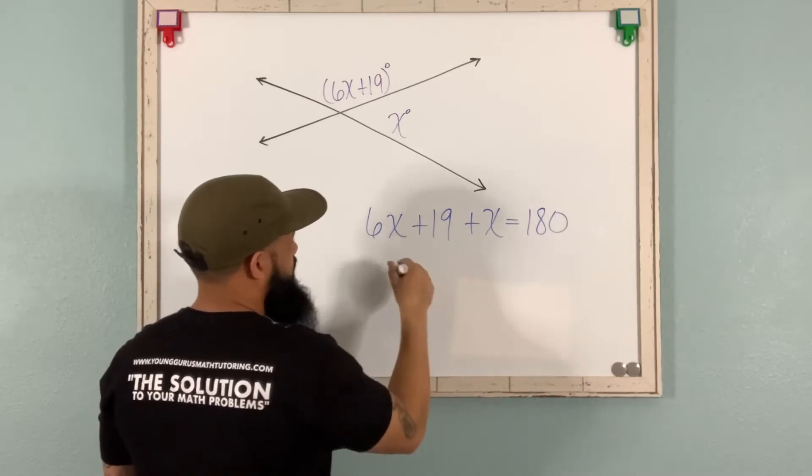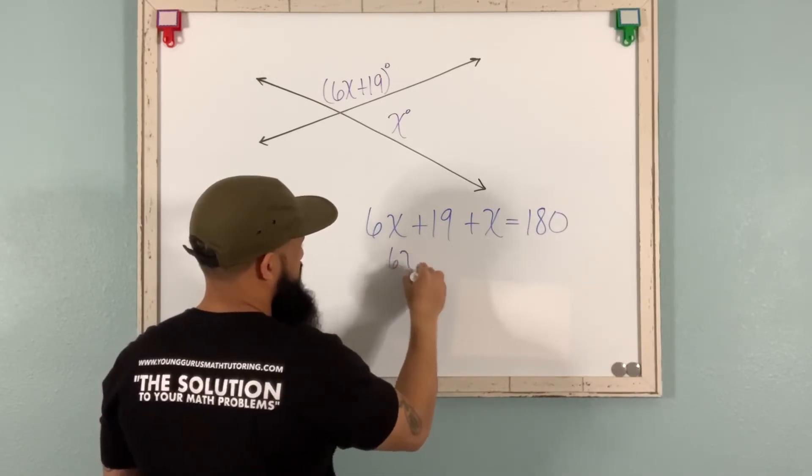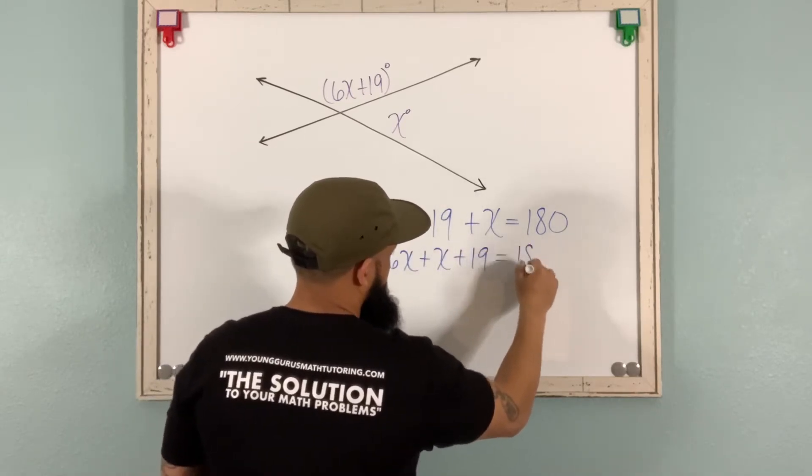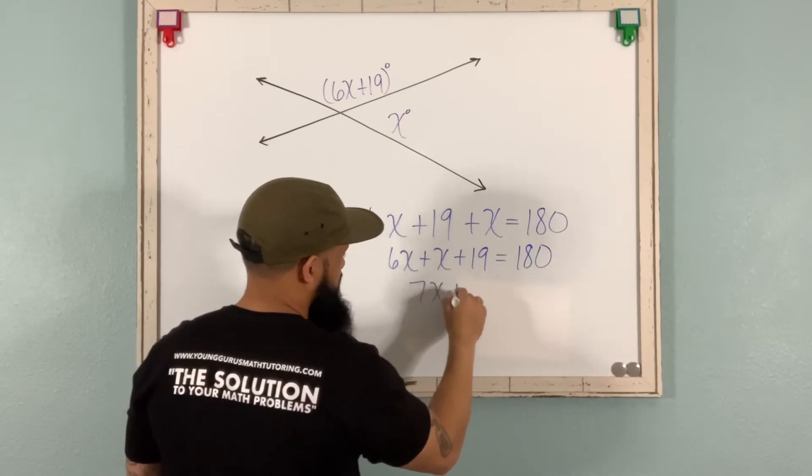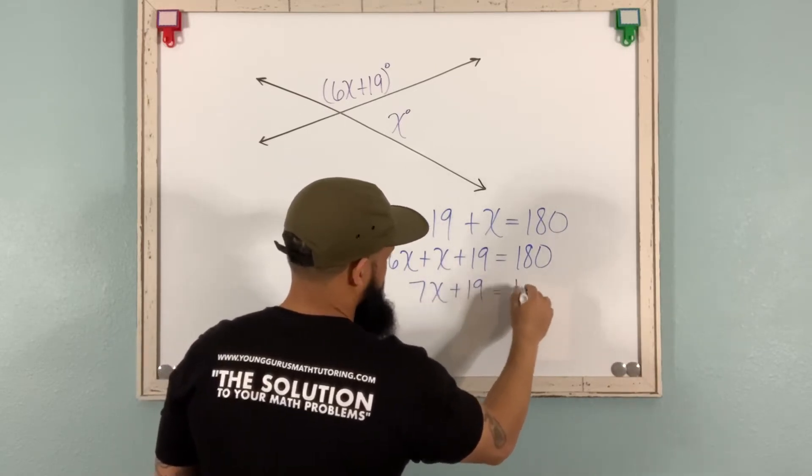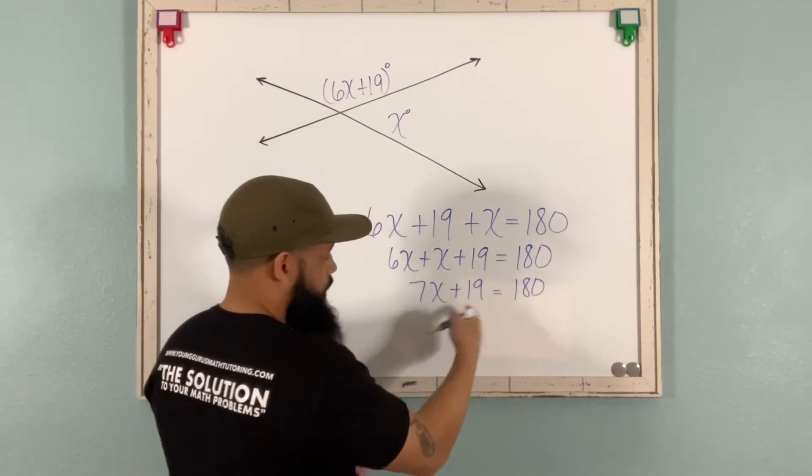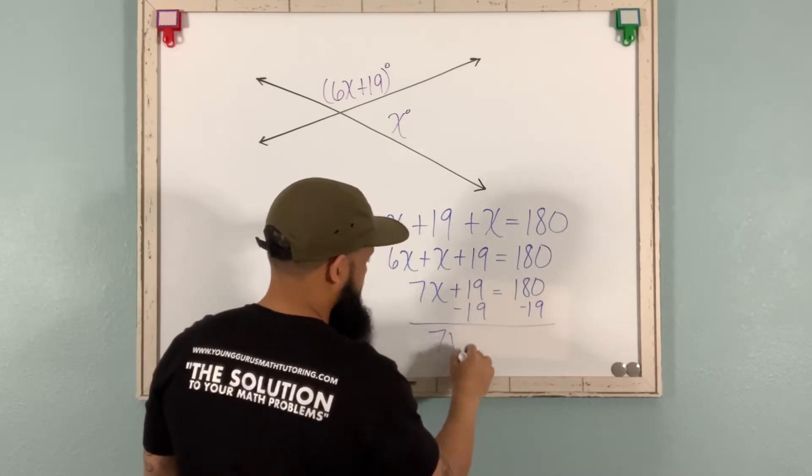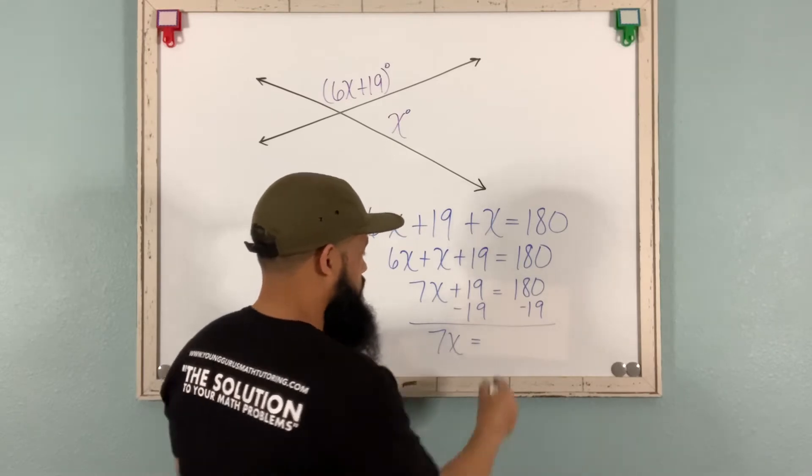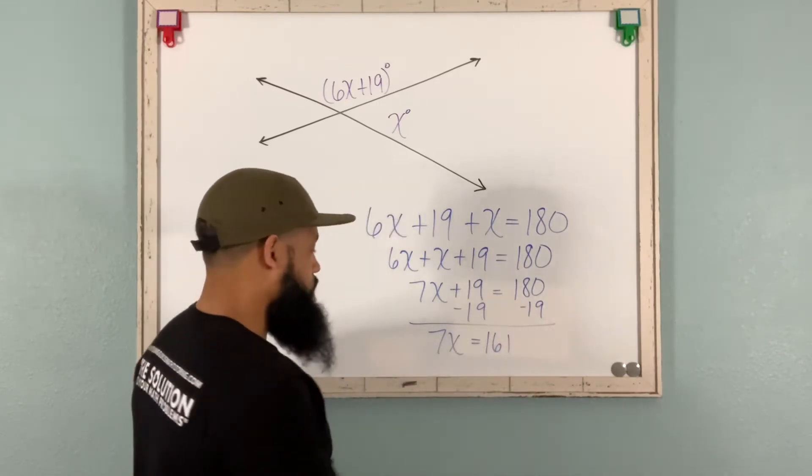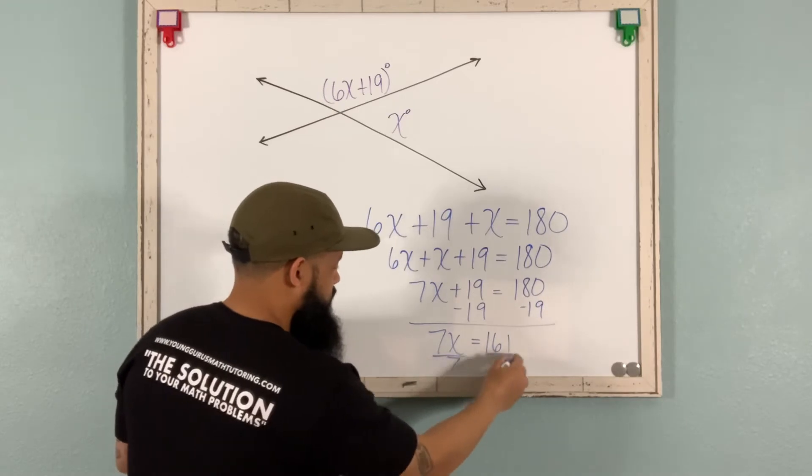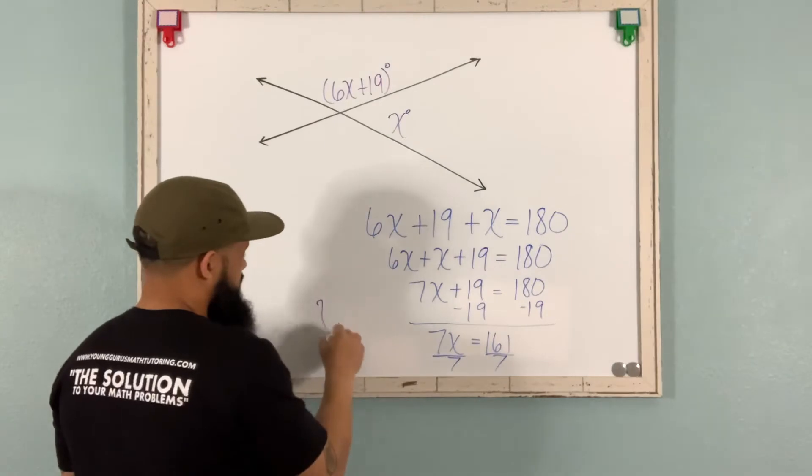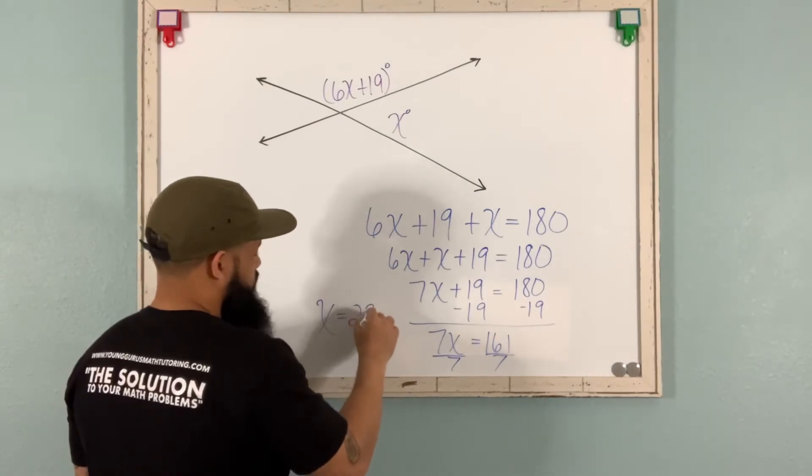Let's combine the like terms, 6x plus x. So we can do this. We can rewrite it if you want. So that would give us 7x plus 19 equals 180. If we subtract 19 from both sides, then we get 7x equals 161. Now we want to divide by 7 on both sides. And when we divide by 7, we're going to actually get x equals 23.